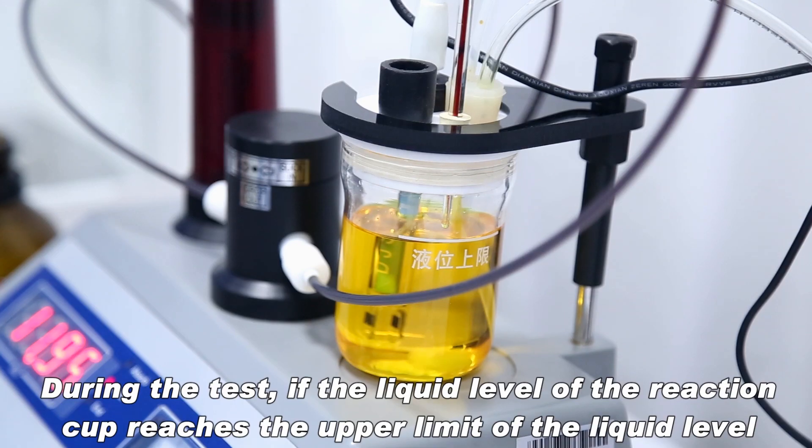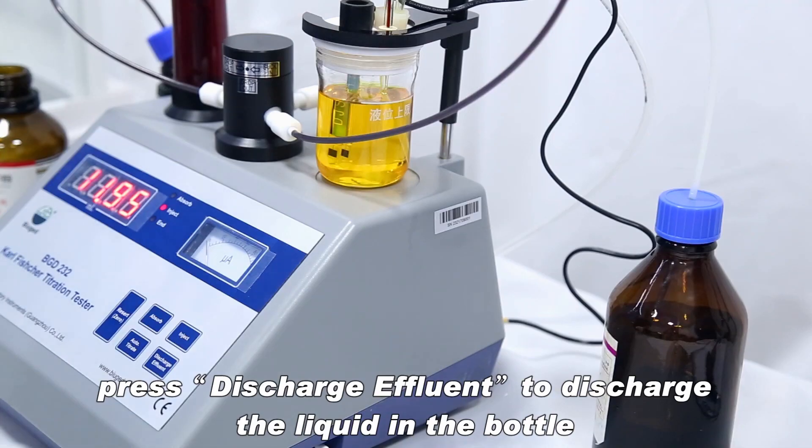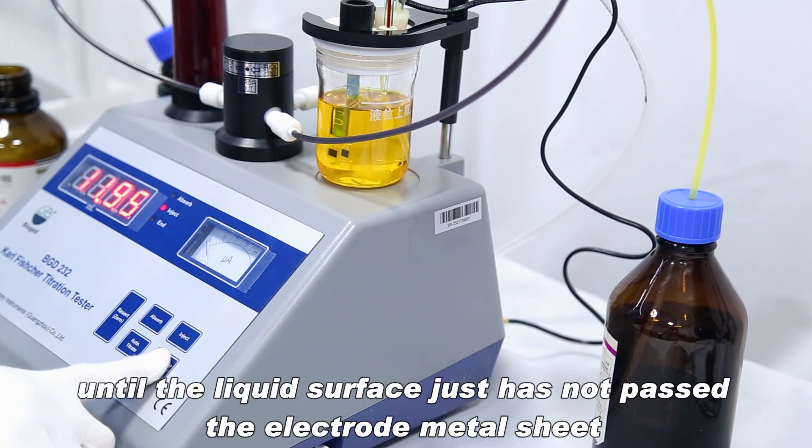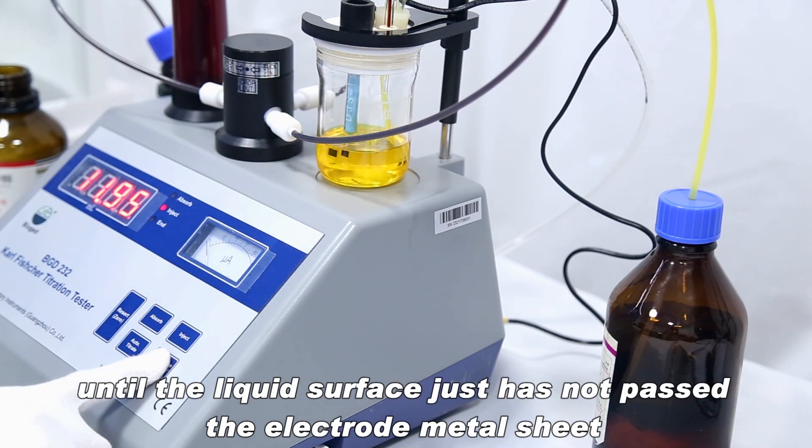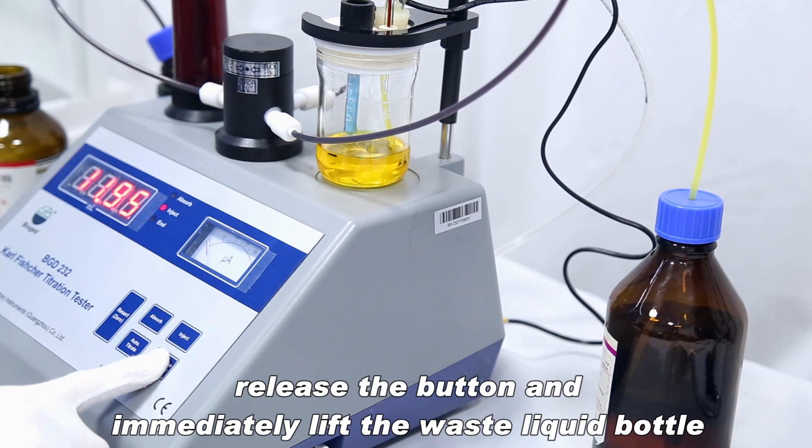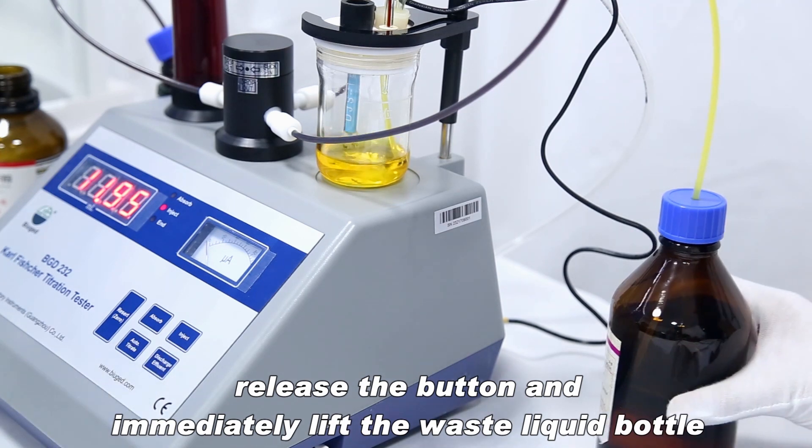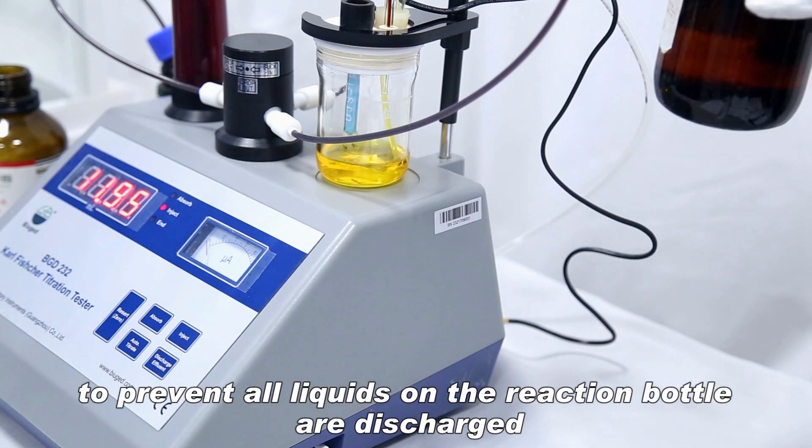During the test, if the liquid level of the reaction cup reaches the upper limit of the liquid level, press discharge effluent to discharge the liquid in the bottle until the liquid surface just has not passed the electrode metal sheet. Release the button and immediately lift the waste liquid bottle to prevent all liquids in the reaction bottle from discharging.